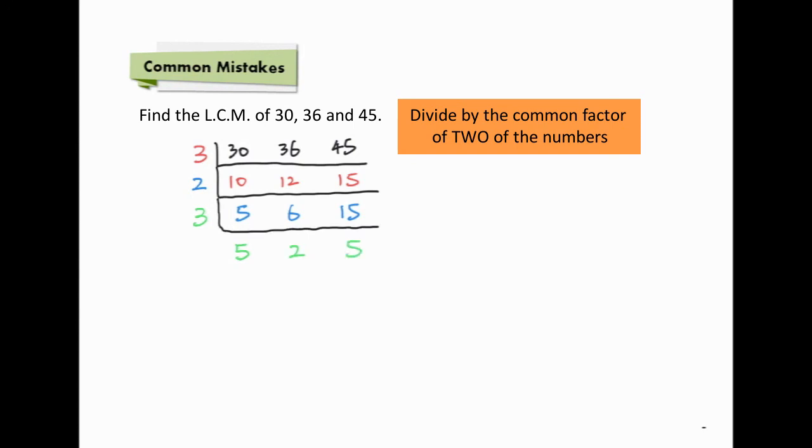Finally, we will consider this 5 and this 5. Their common factor is 5. We continue the division using 5. We have 1, 2 and 1. We finish all divisions here. Get the LCM by multiplying these 7 numbers, like the L shape. The final answer is 180.